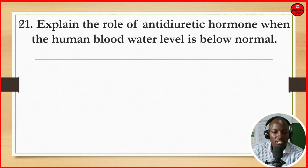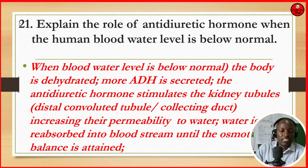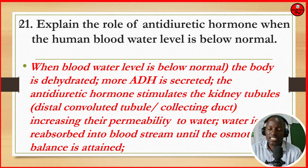Question 21: explain the role of antidiuretic hormone when the human blood water level is below normal. When blood water level is below normal, the body is dehydrated, and therefore more ADH is secreted. The antidiuretic hormone stimulates the kidney tubules — the distal convoluted tubule and collecting duct — increasing their permeability to water. Water is reabsorbed into the bloodstream until the osmotic balance is attained.